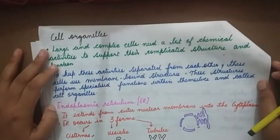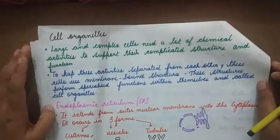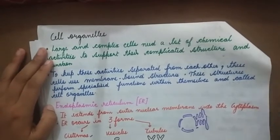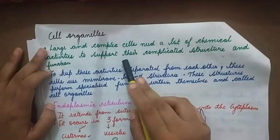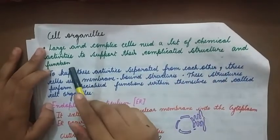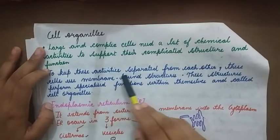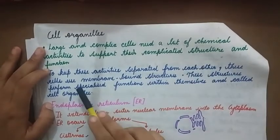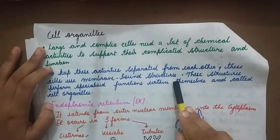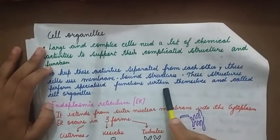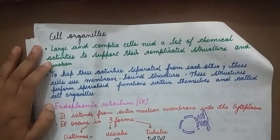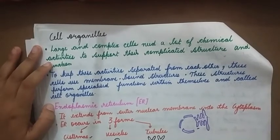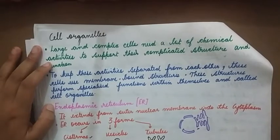Good morning students. We will move on to the next revision topic, that is cell organelles. Large and complex cells need a lot of chemical activities to support their complicated structure and function. To keep these activities separated from each other, these cells use membrane-bound structures. These structures perform specialized functions within themselves and are called cell organelles. Cell organelles are found within the cell, and there is division of labor within them because each one has taken up one particular function.